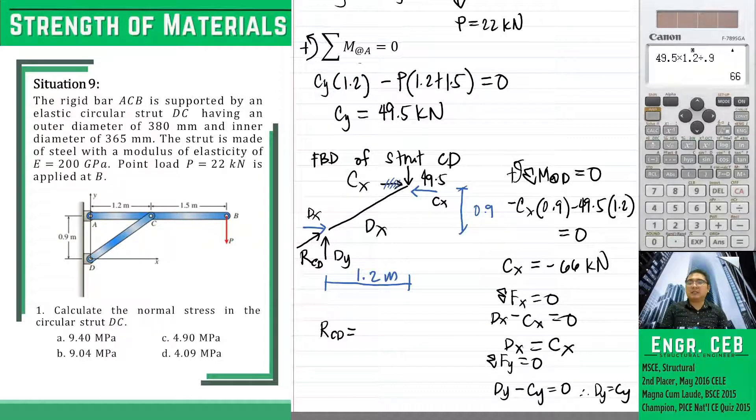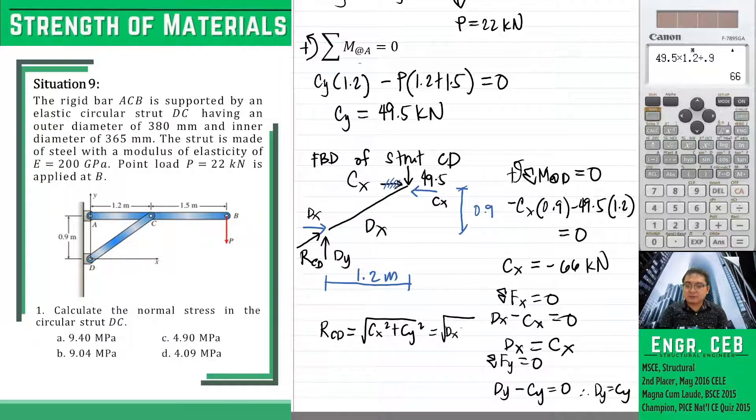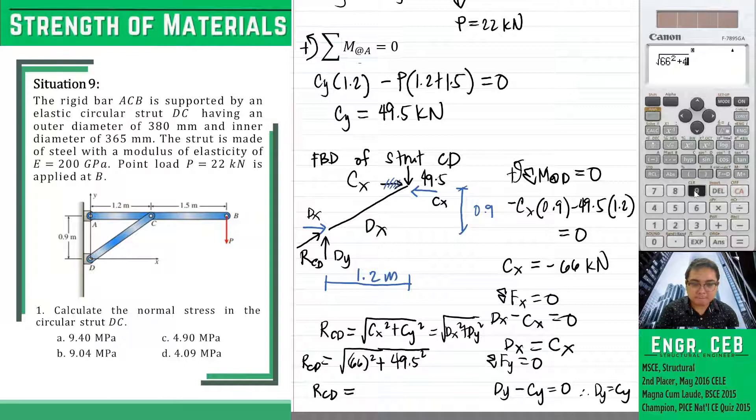We can now determine the resultant force in strut CD. That is square root of CX squared plus CY squared or square root of DX squared plus DY squared. So let us solve. RCD is square root of 66 squared plus CY which is 49.5 squared. Therefore, the normal force in strut CD is 82.5 kN.